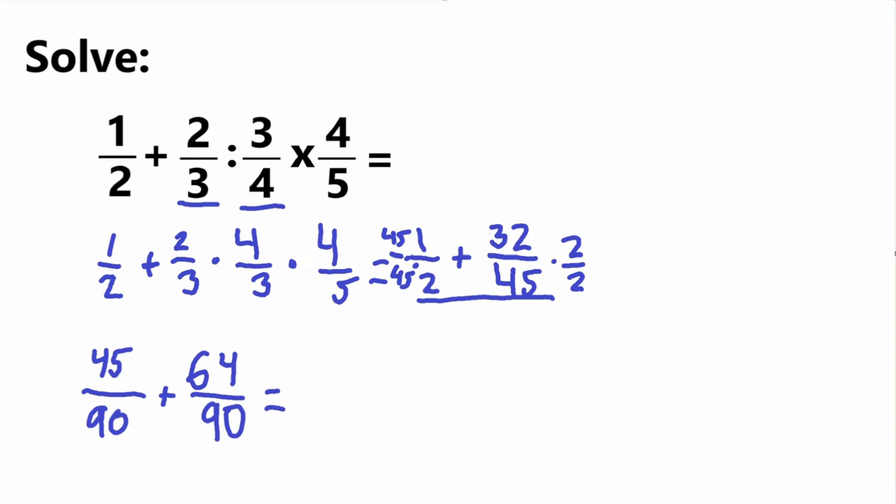And now all we can do is just simple math, so 64 plus 45. So whenever you add, remember, you just add the numerator, not the denominator. So 60 plus 40 is 100, 5 plus 4 is 9, so 109 over 90.